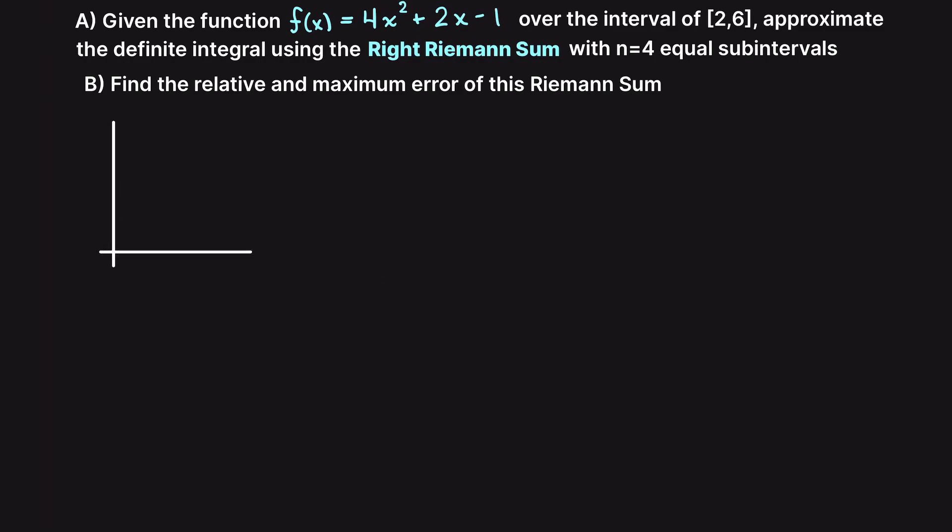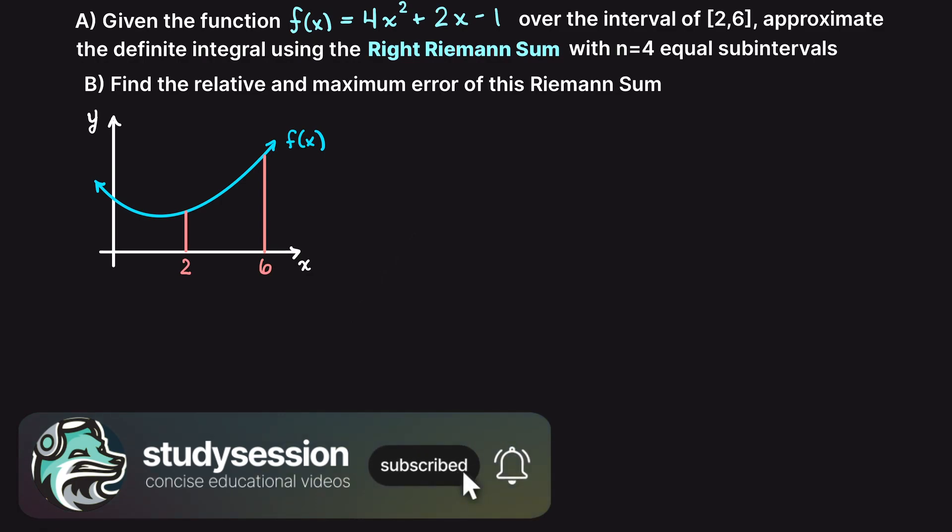The first thing I am going to do here is draw out our function so that we can visually see the steps that we are going to be applying. The polynomial function will look something like this, with our lower integration bound 2 and our upper integration bound of 6, and we are trying to approximate the area under the curve within these bounds.